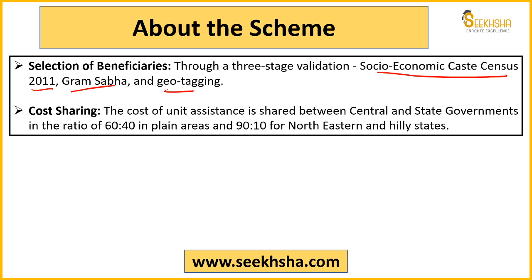Regarding cost sharing between the central and state governments: for general states, cost sharing will be in a 60:40 ratio - meaning the central government gives 60 rupees and the state government gives 40. For North-Eastern states and hilly states, the sharing is 90:10 - the centre gives 90 and the state gives 10.